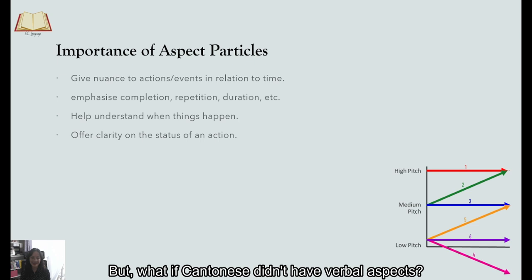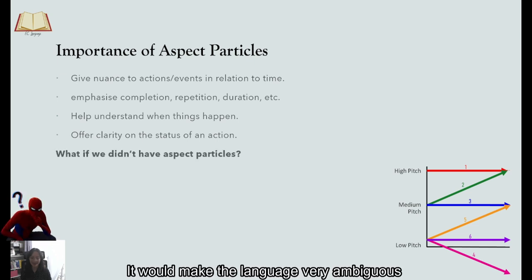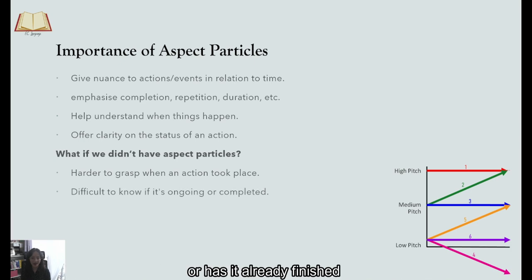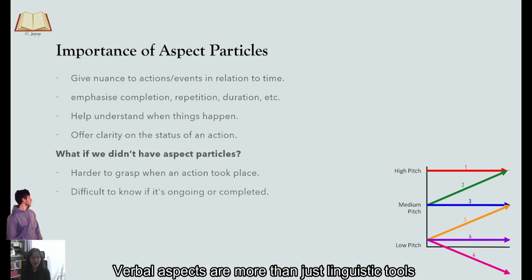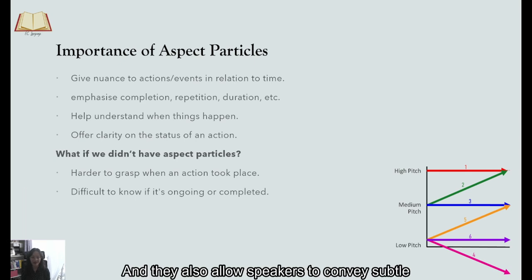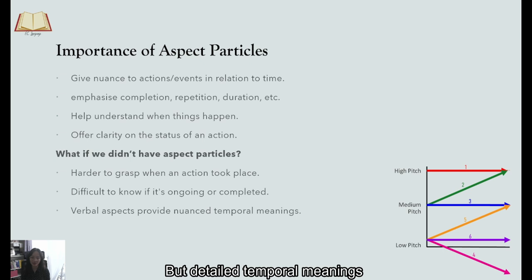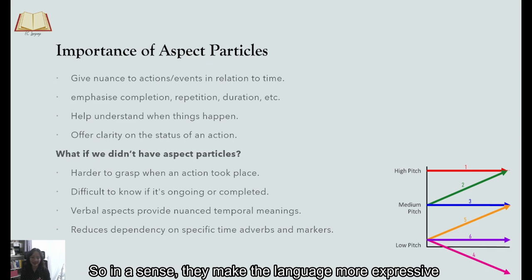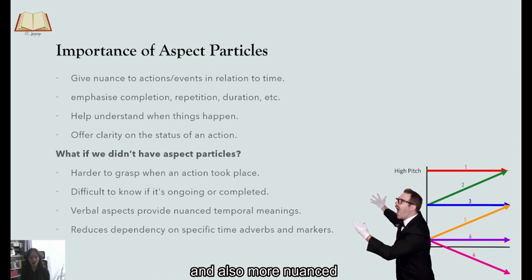But what if Cantonese didn't have verbal aspects? It would make the language very ambiguous. Without them, this list would struggle to determine when an action took place, if it's still ongoing or has it already finished. Now, verbal aspects are more than just linguistic tools. They enrich the Cantonese language and they also allow speakers to convey subtle but detailed temporal meanings without always resorting to specific time indicators. So in a sense, they make the language more expressive and also more nuanced.